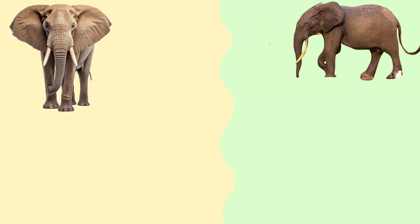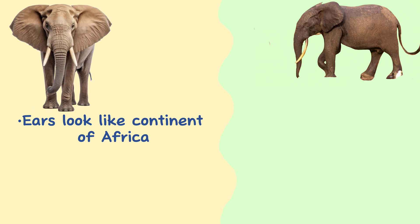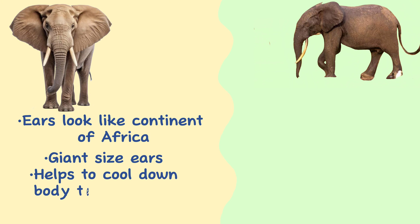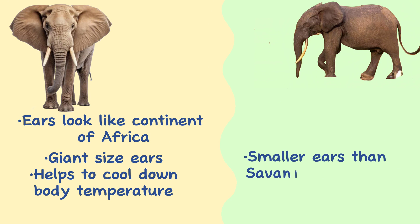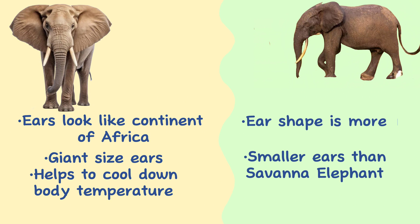Ear. A distinguishable characteristic of the savannah elephant is its ears that resemble the continent of Africa. These giant ears aid in cooling their body down in the hot African sun. Since forest elephants live in a slightly cooler environment and have more shelter from the hot sun, their ears are slightly smaller and more oval-shaped rather than Africa-shaped.